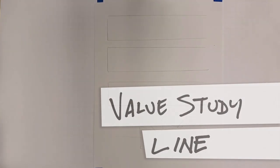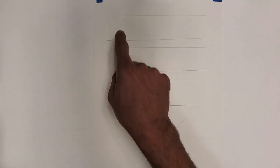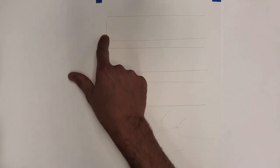Okay, here we go. We're going to do an exercise in value study using lines. So we have our paper and we've actually set up three open rectangles. Notice that on three sides they have lines very lightly drawn with pencil but not on the third.